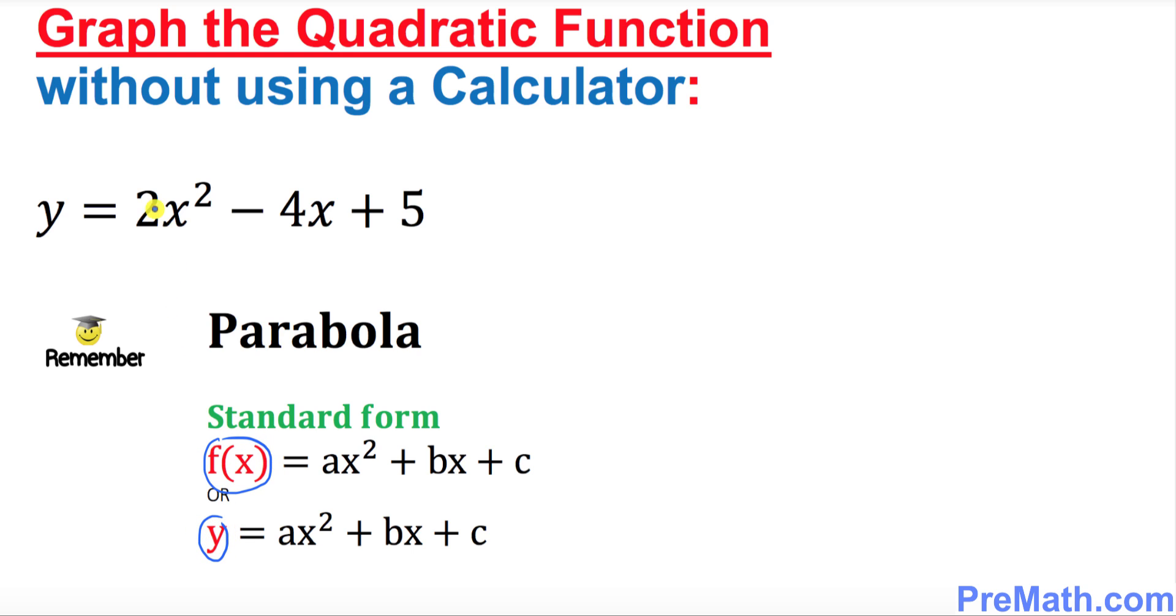That means in our case, in this standard form, a is 2, b is negative 4, and c is positive 5.